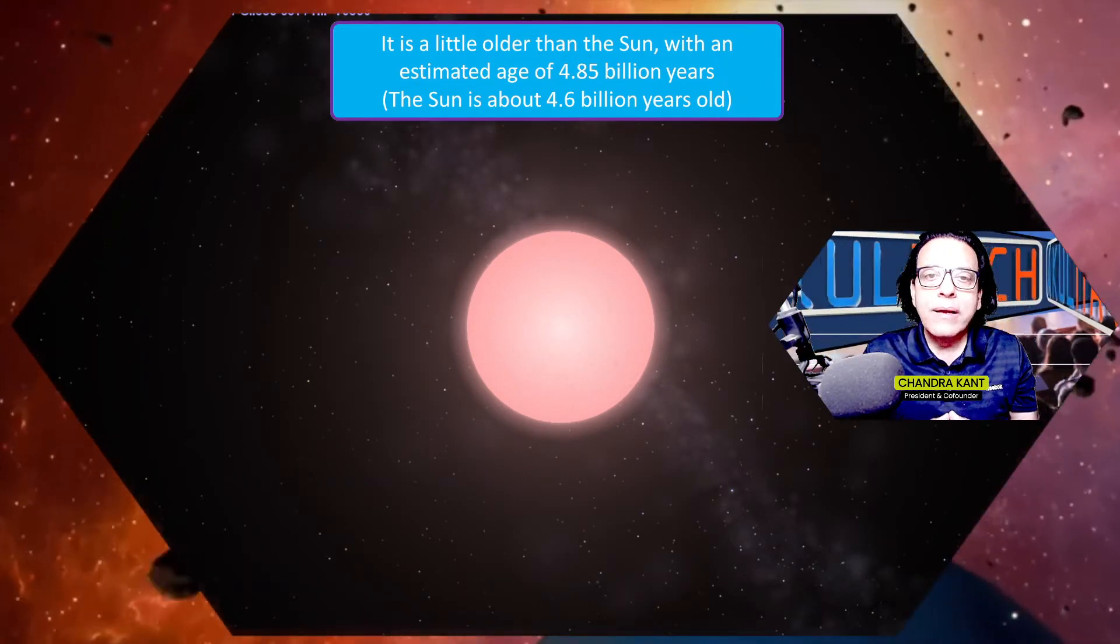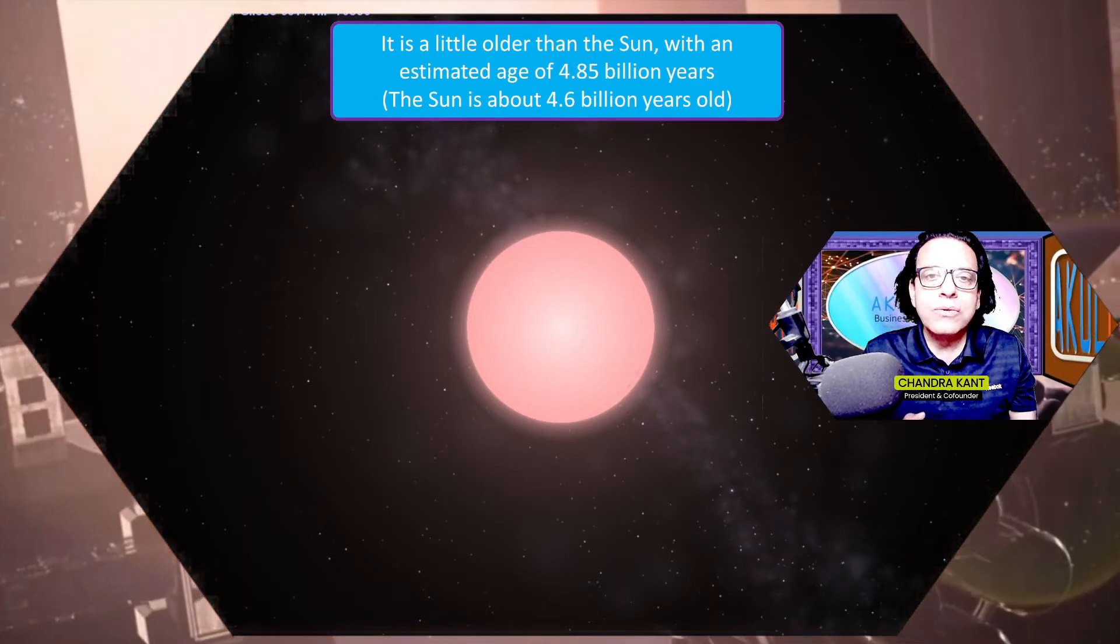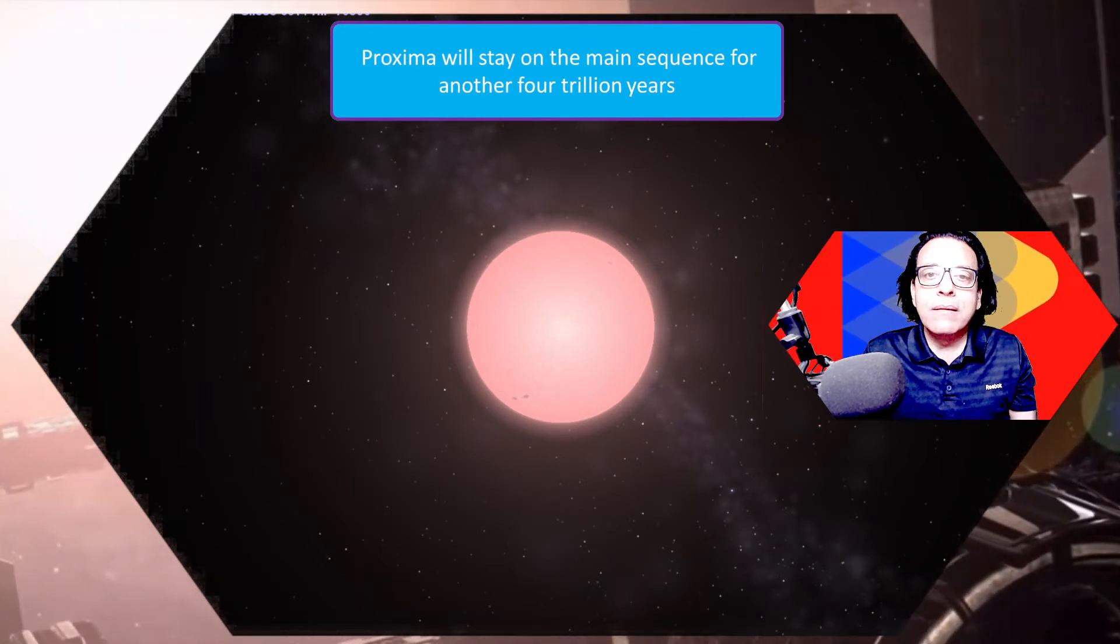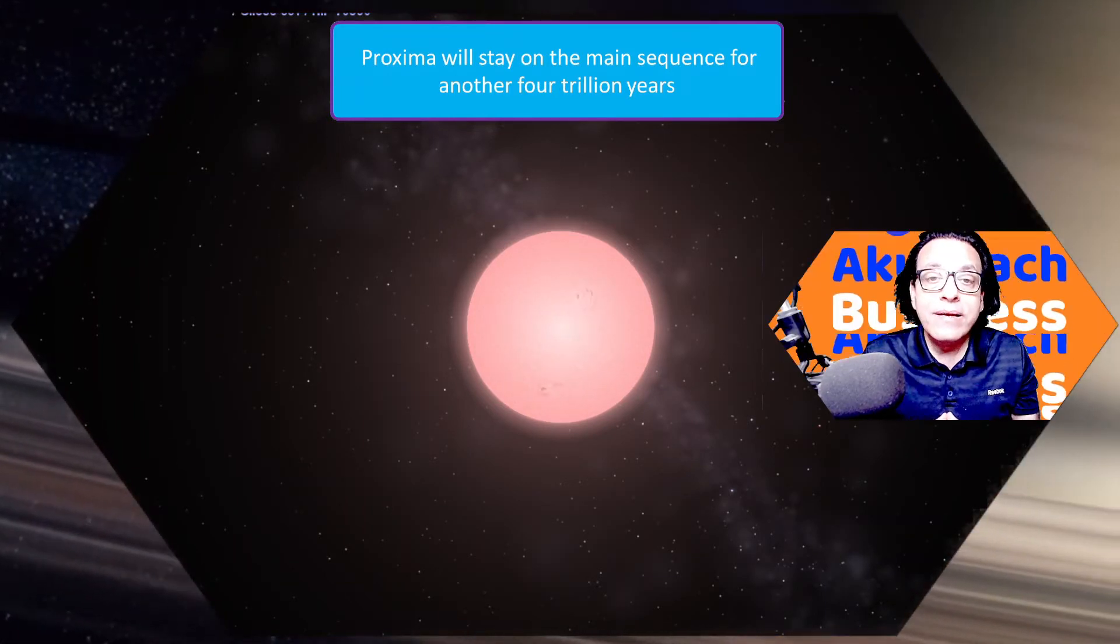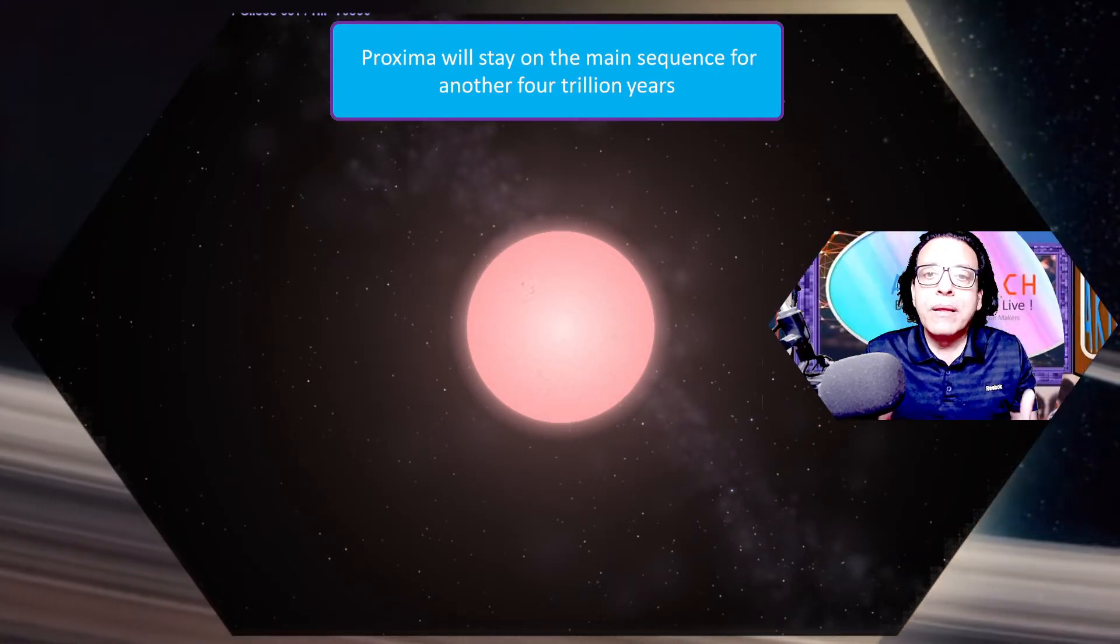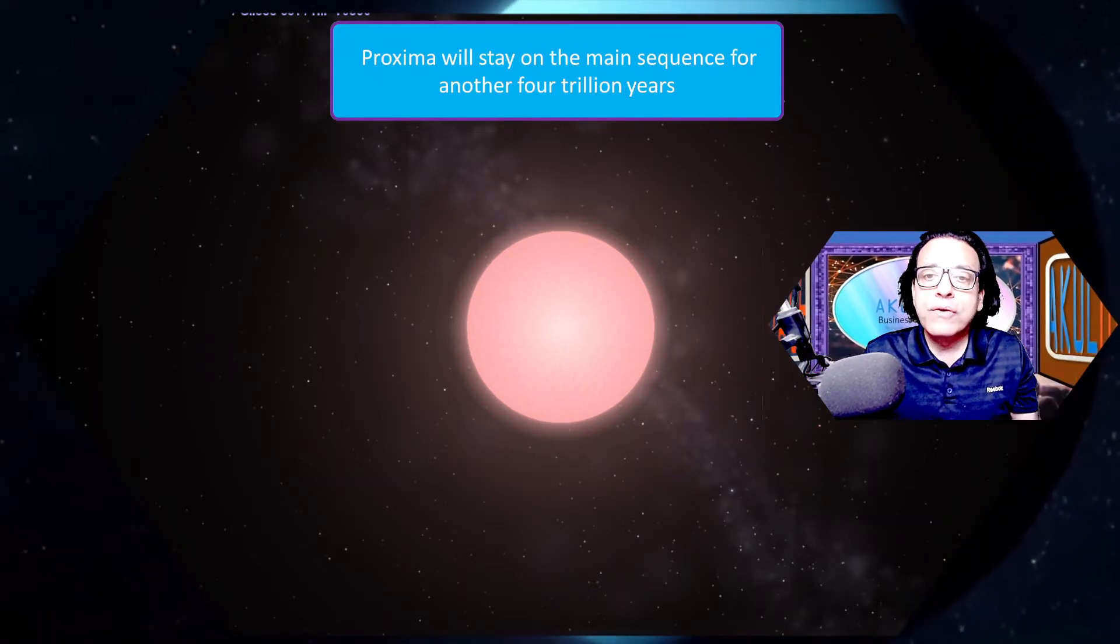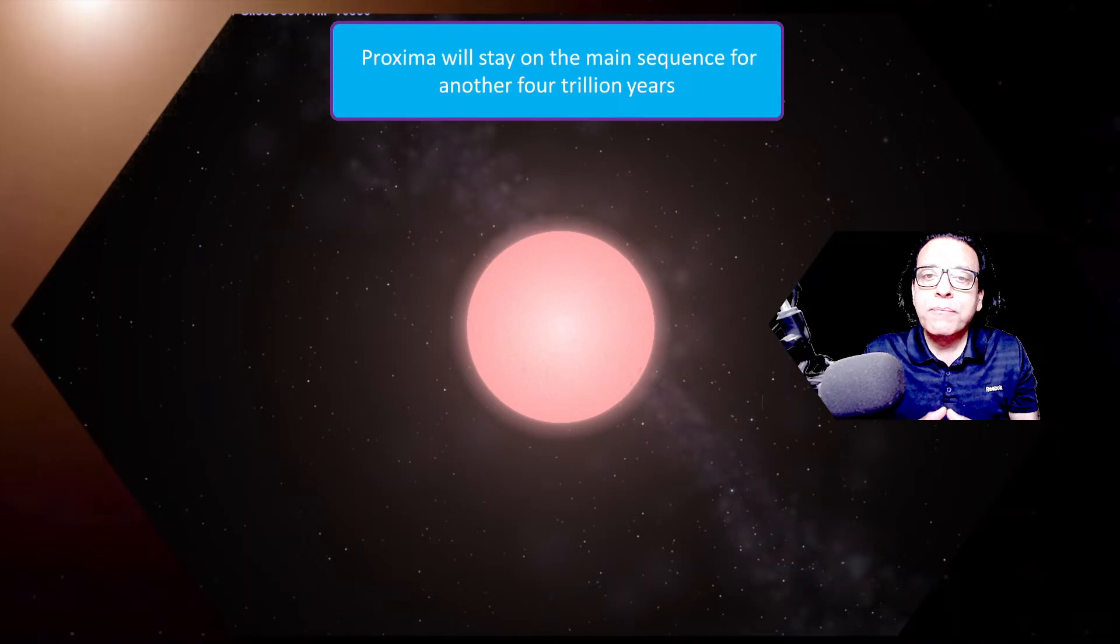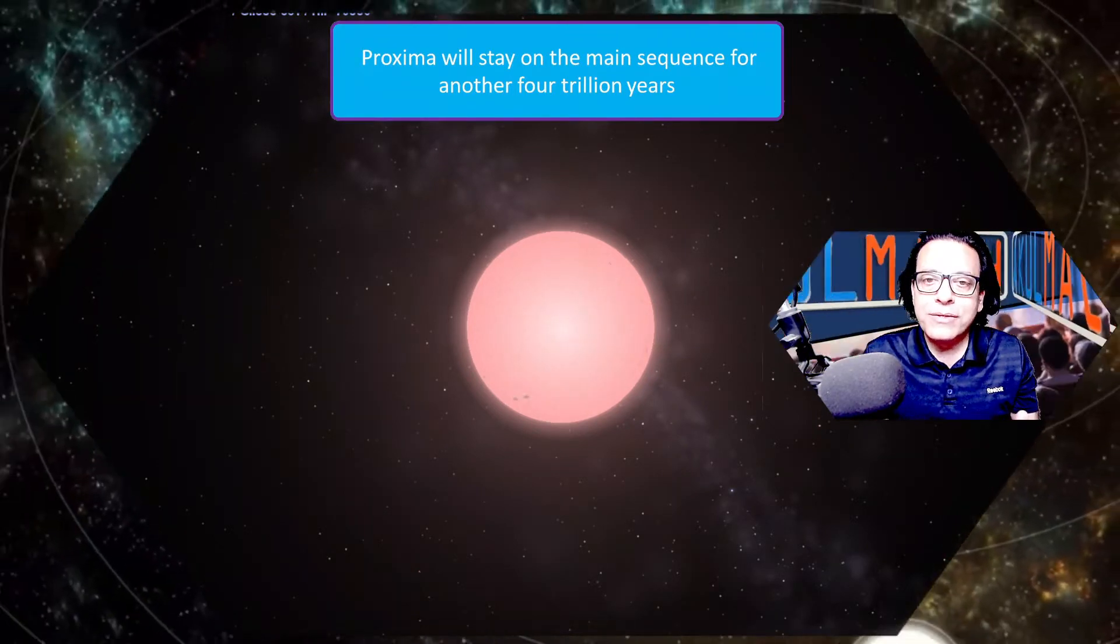It burns slowly, so it will have more life. Proxima Centauri, being a red dwarf, will live longer than the sun. The sun will survive for another five to six billion years, whereas Proxima Centauri will go on for more time. The estimate is about four trillion years because the thermonuclear reaction is so slow. It burns the hydrogen and converts it into helium at a very slow rate. The estimated age for red dwarfs is four trillion years.